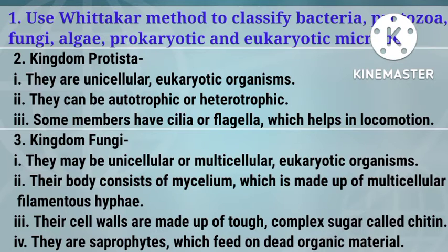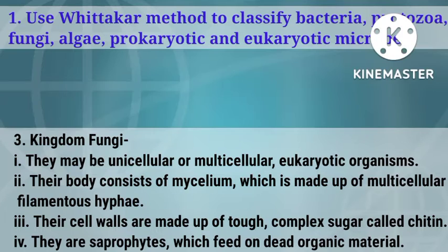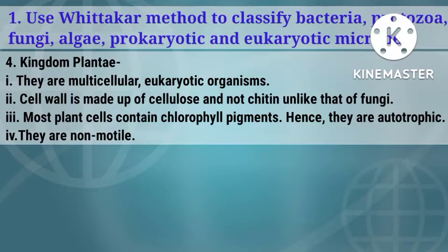Continuing with Fungi: their cell walls are made up of a tough complex sugar called chitin; they are saprophytes which feed on dead organic material. Fourth kingdom, Plantae: they are multicellular eukaryotic organisms; cell wall is made up of cellulose and not chitin, unlike that of fungi.